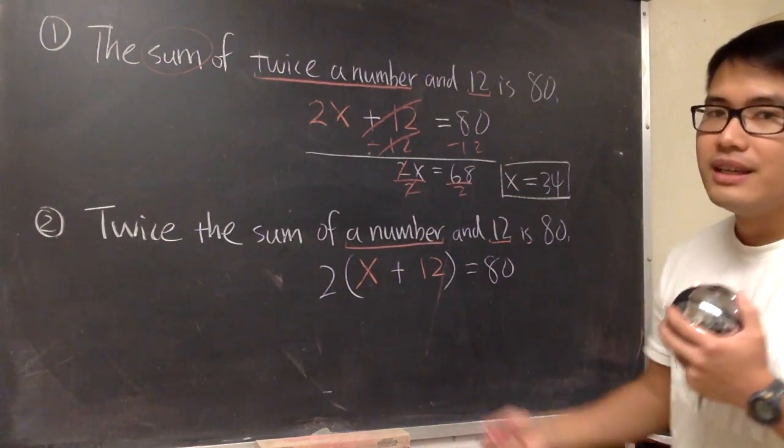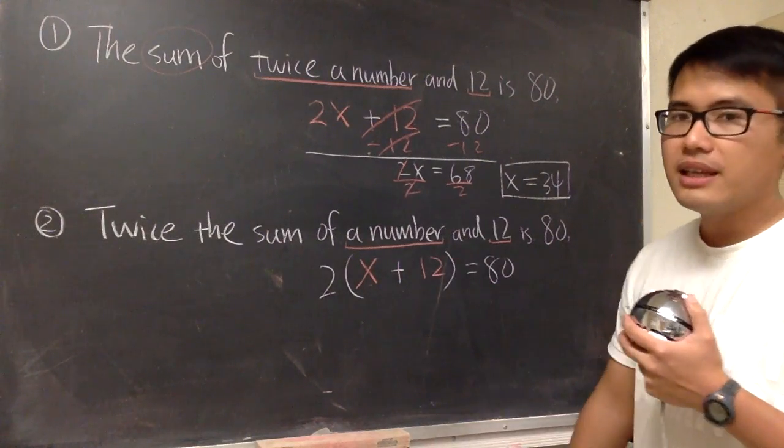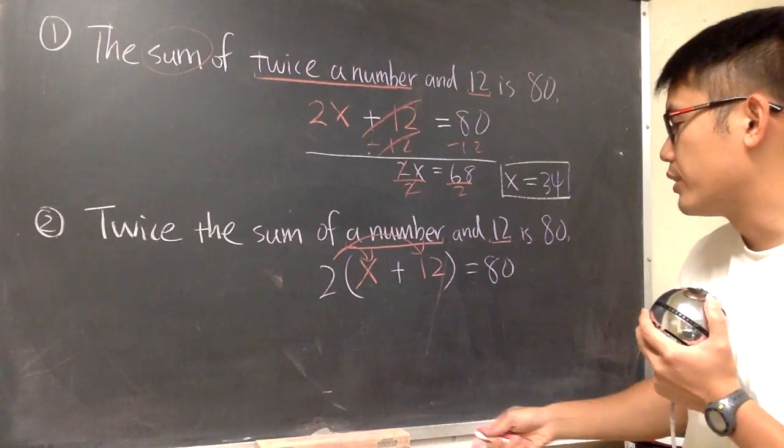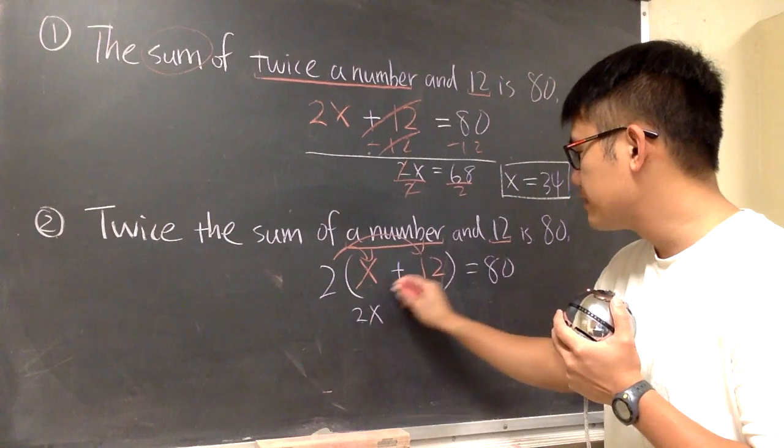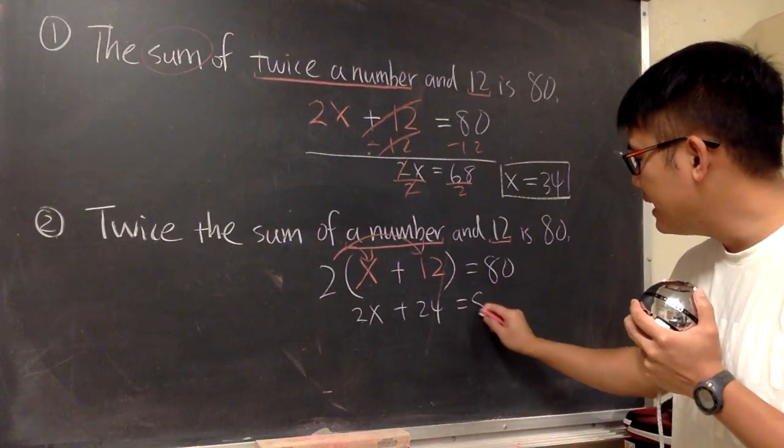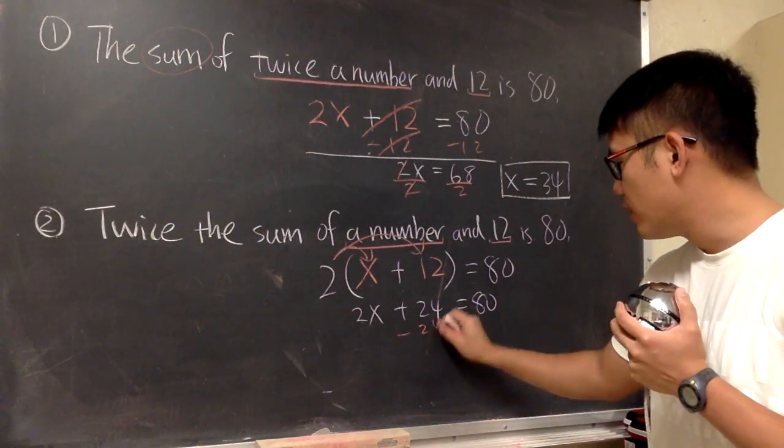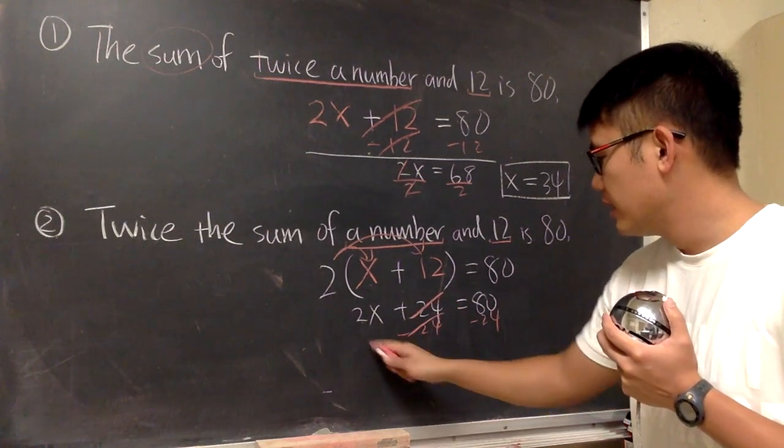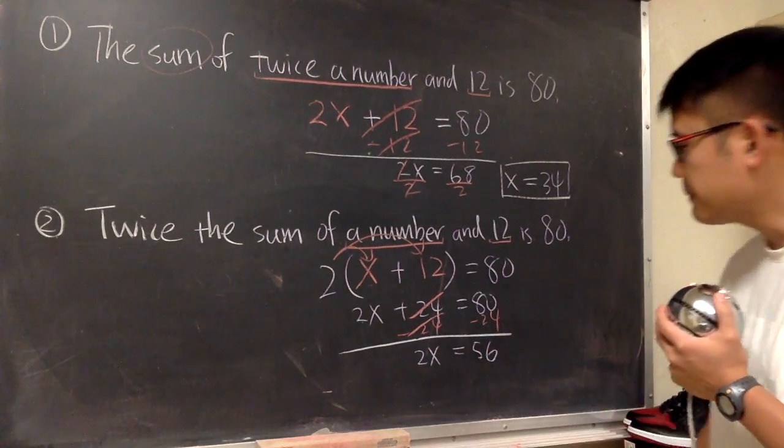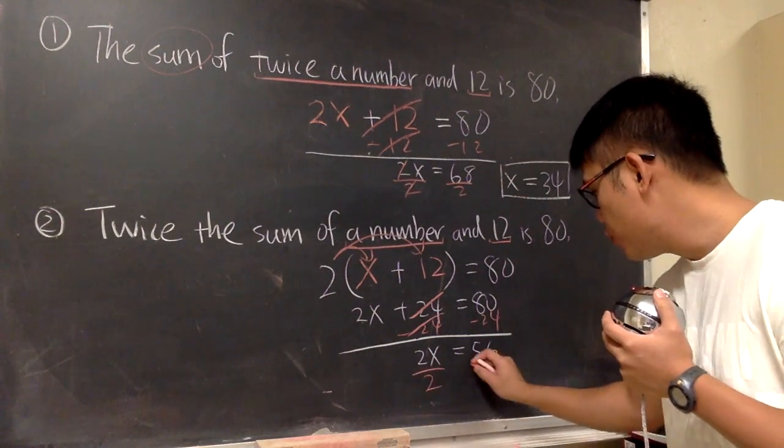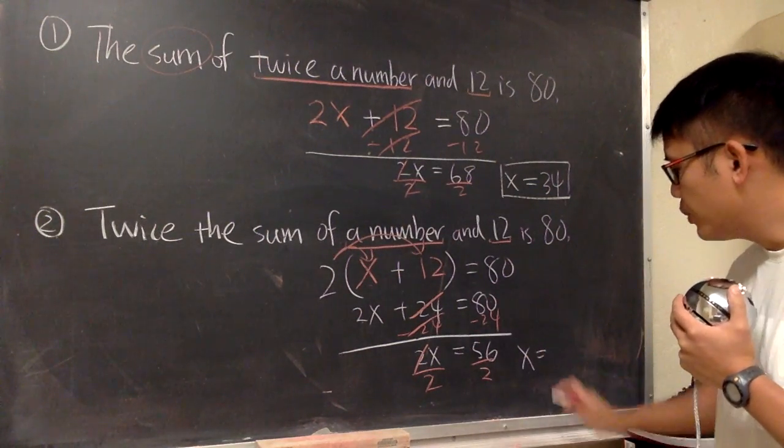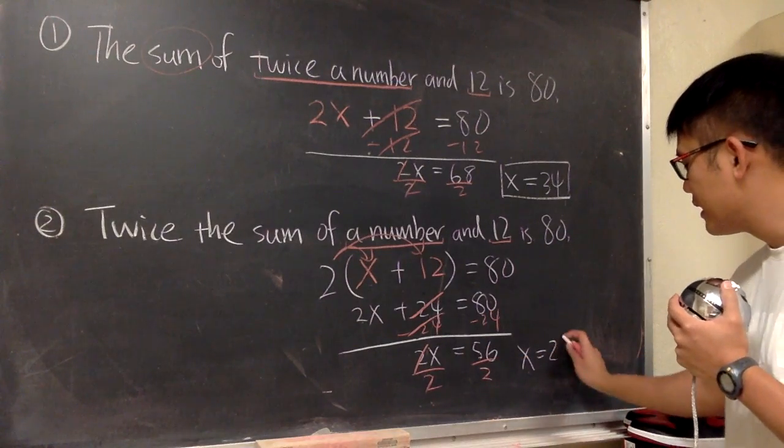On the other hand, this is what we have. 2 times the parenthesis, x plus 12 inside. You can divide it by 2 on both sides if you would like, but then I want to be consistent. Let's distribute the 2 into the parenthesis. So, we will have 2x plus 2 times 12, that's 24. That's equal to 80. And then let's subtract 24 on both sides. Then we will have 2x, this is equal to 56, right? At the end, divide both sides by 2. Cancel, cancel. In the second situation, the unknown x is equal to 56 divided by 2, that's 28.